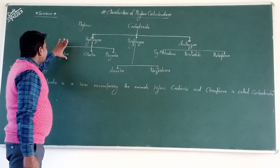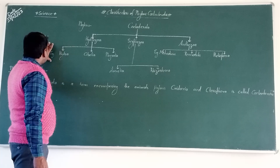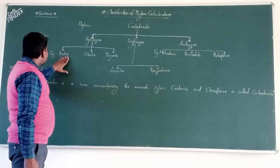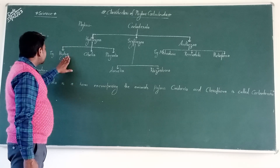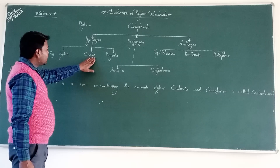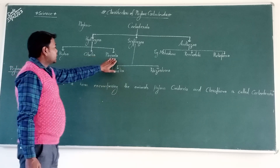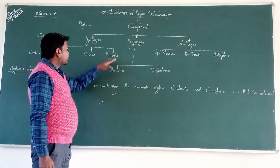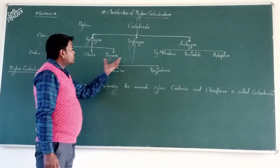Hydro Joga are divided by three main orders, which are named as Hydra, Omena, and Pythilia.